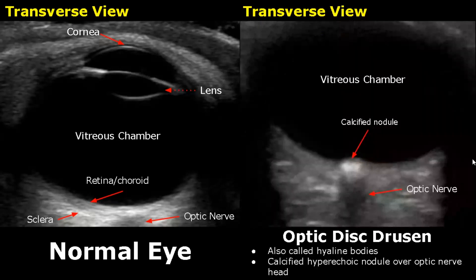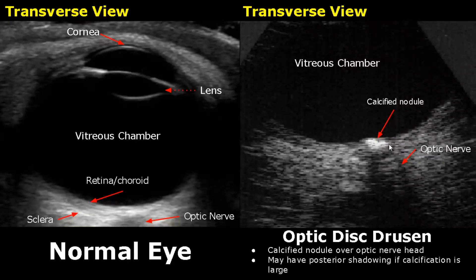Optic disc drusen is a condition in which a calcified hyperechoic nodule is found over the optic nerve head — it is also called hyaline bodies. If the calcified nodule is large enough, it may have posterior acoustic shadowing.